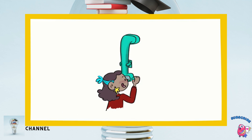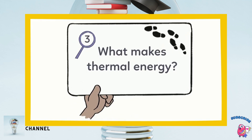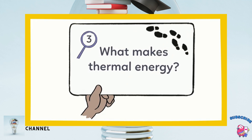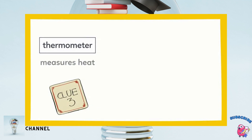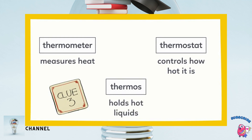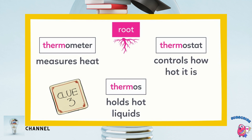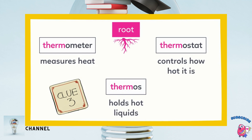Over there: what makes thermal energy? This one's tough, but we can do it. The hints are: thermometer — measures heat; thermostat — controls how hot it is; thermos — holds hot liquids. Therm is the root for all of these words. What do the definitions have in common? The root therm means heat.